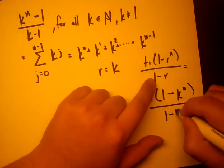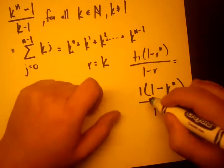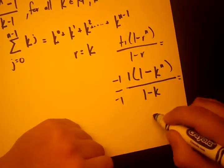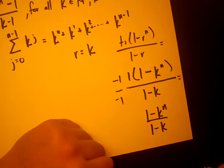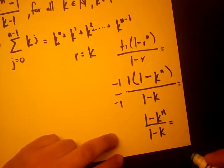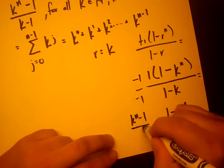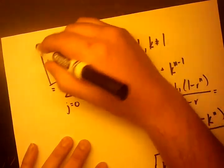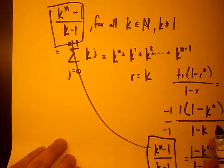And 1 minus r again is 1 minus k. And if we just apply a negative 1 to both sides, so if we multiply a negative 1 over negative 1, we're allowed to flip these fractions, so it becomes 1 minus k to the n over 1 minus k, which becomes what we know as k to the n minus 1 over k minus 1. And we see that that's what it is in the beginning. So keep that theorem in mind, we'll be using that one.